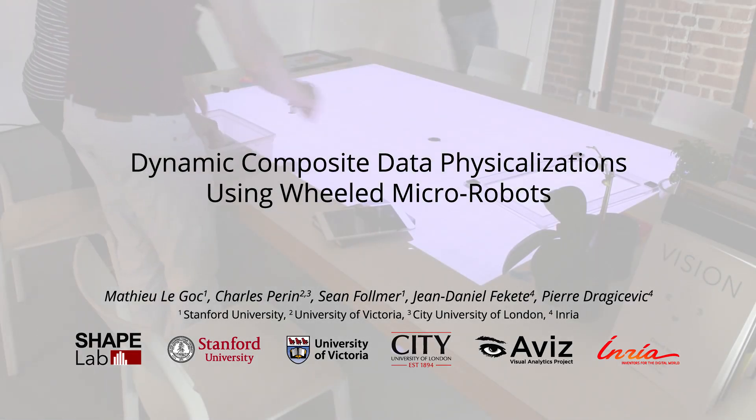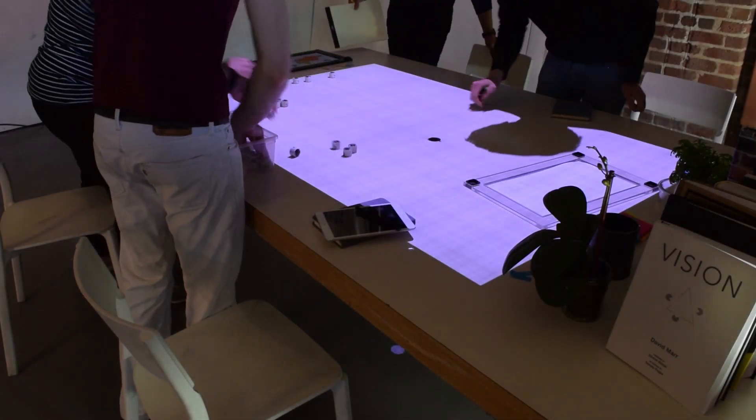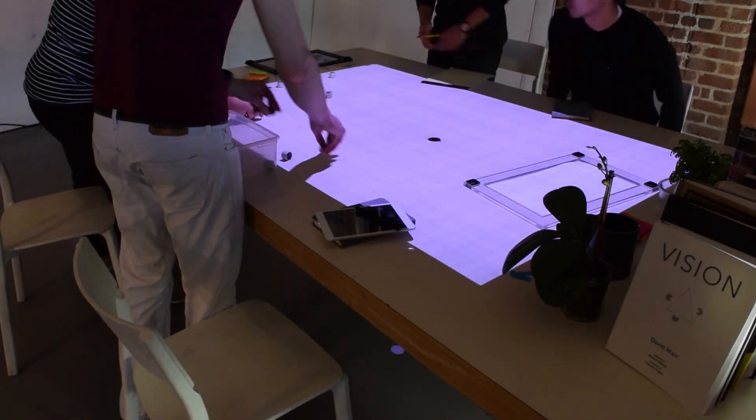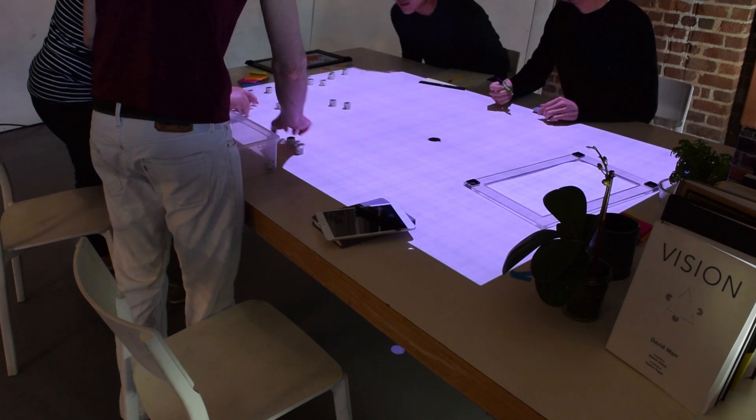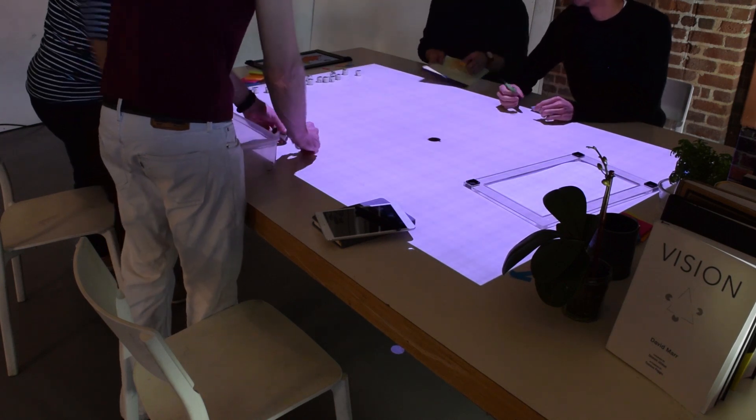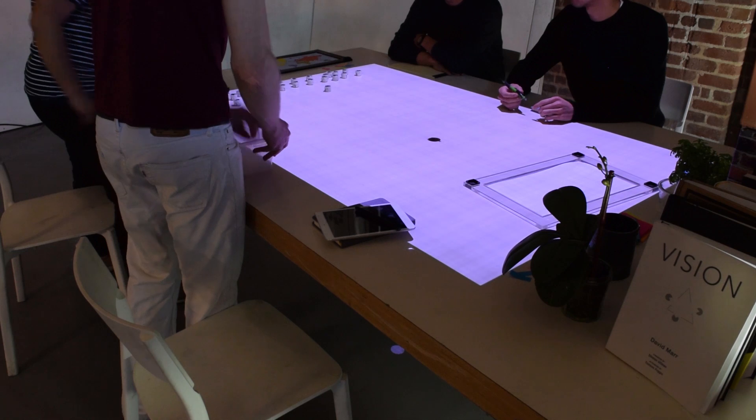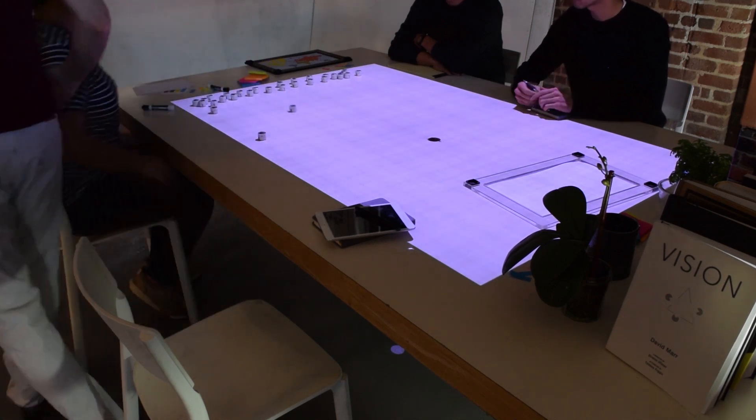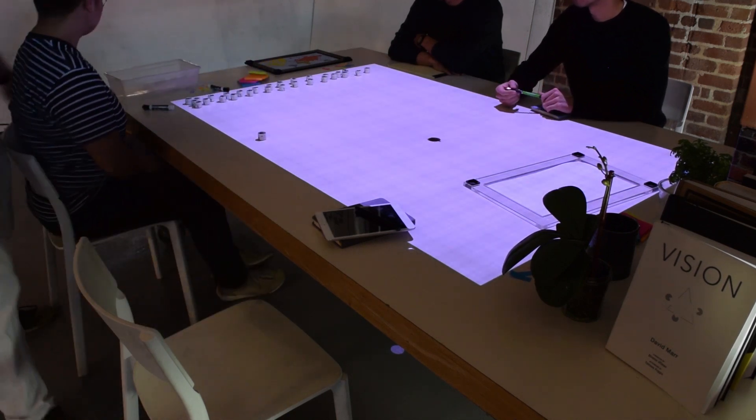Dynamic Composite Data Physicalizations are a new class of physical visualizations that use collections of self-propelled objects to represent data. In this scenario, a committee of four faculty members meets to examine 24 pre-selected student applications to a graduate program using a Zoid platform.